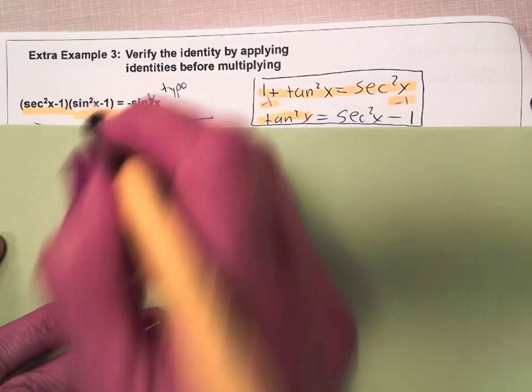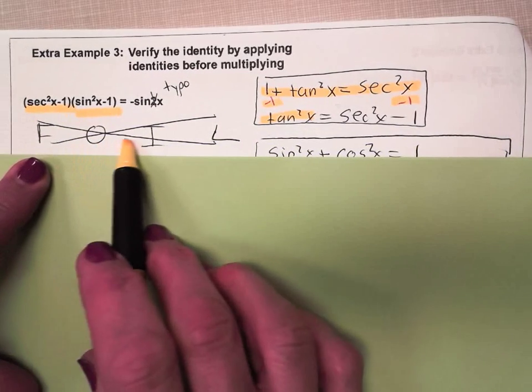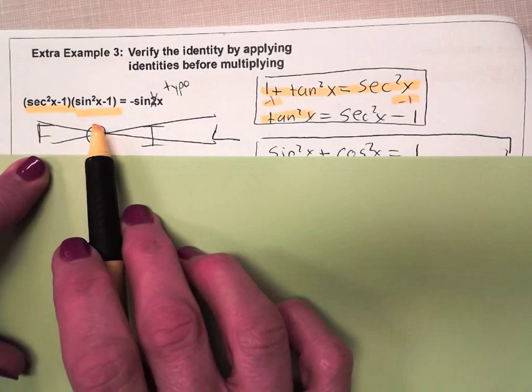Now the next set of parentheses has something a little more complicated looking. I put here this big FOIL with a cross out so you can see that you don't always FOIL.